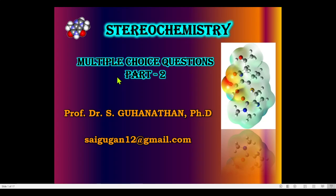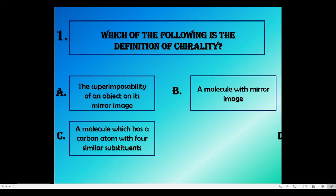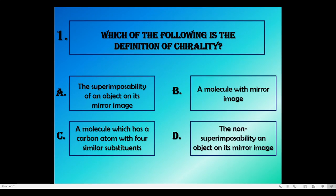Which of the following is the definition of chirality? Option A: the superimposability of an object on its mirror image. Option B: a molecule with a mirror image. Option C: a molecule which has a carbon atom with four similar substituents. Option D: non-superimposability of an object on its mirror image.